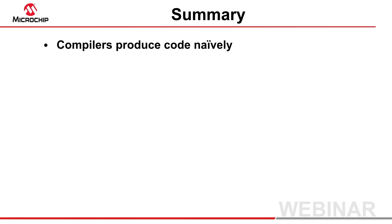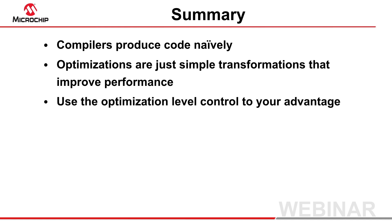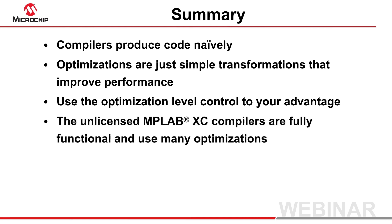To conclude: don't be too surprised by the unoptimized output of a compiler — naively producing code is simply a better way for them to work. Don't be scared of optimizations; they're just transformations that can improve the performance of code. Don't be afraid to adjust the optimization level to suit the circumstance — maybe to target speed over space, or improve debuggability during code development. And finally, don't readily dismiss the unlicensed MPLAB XC compilers. They're fast, employ many of the available optimizations, and best of all, they're free.